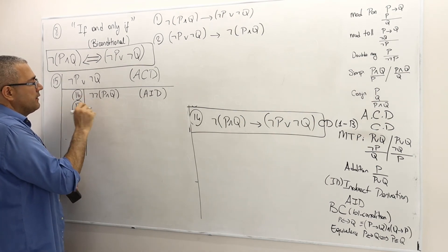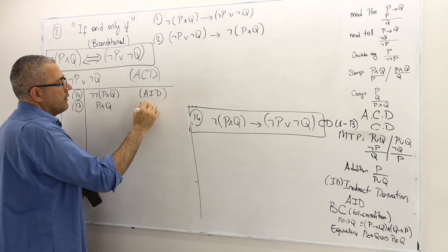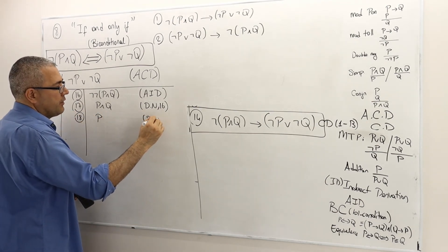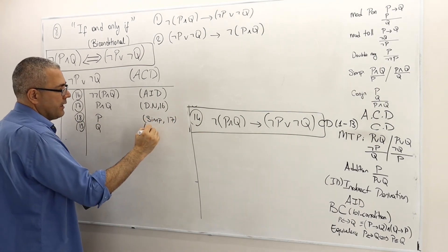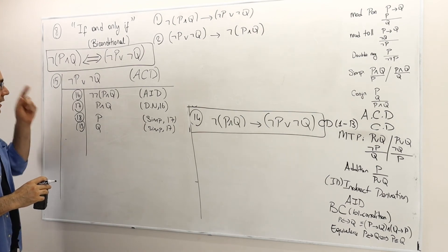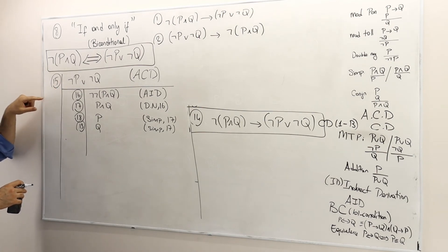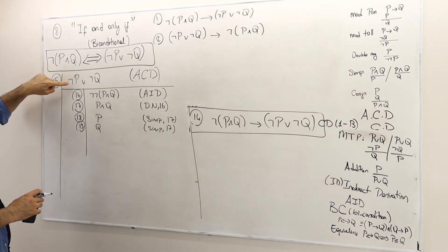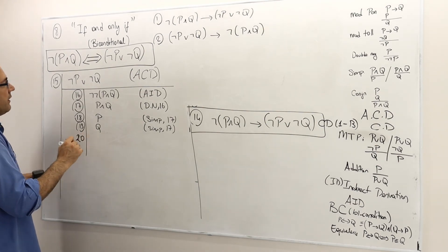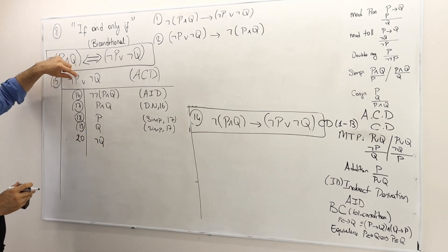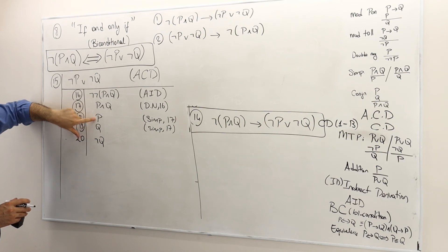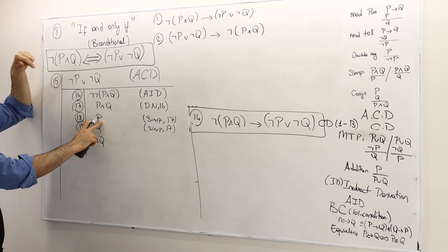I open a new box at line 16 and deny my conclusion: assume not not P and Q — assumption for indirect derivation. Line 17: by double negation of line 16, P and Q must be true. Then by simplification of line 17, P is true, and Q is also true by simplification of line 17.